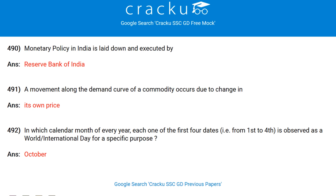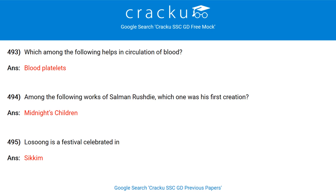Which women scholars challenged the invincible Yajnavalkya? Gargi. Mahavira was the 24th Tirthankara. Which amendment act reduced the voting age from 21 to 18? The 61st Amendment Act. Which president held the office for two consecutive terms? Dr. Rajendra Prasad. The term closure in parliamentary terminology implies stoppage of debate on a motion. Which subject is not available on the Union List? Trade Unions. Monetary policy in India is laid down and executed by the Reserve Bank of India.